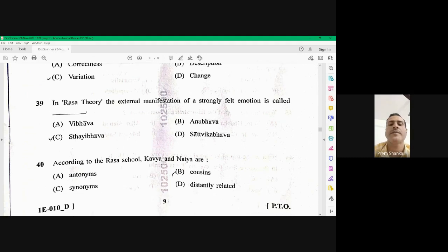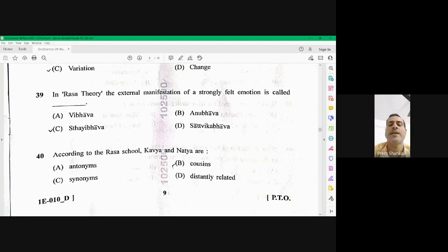Question number 40, according to the Rasa school, Kavya and Natya are? I have a doubt in this question. As far as I know, the right option should be cousins. But if there is any variation in the answer, kindly let me know in the comment box.